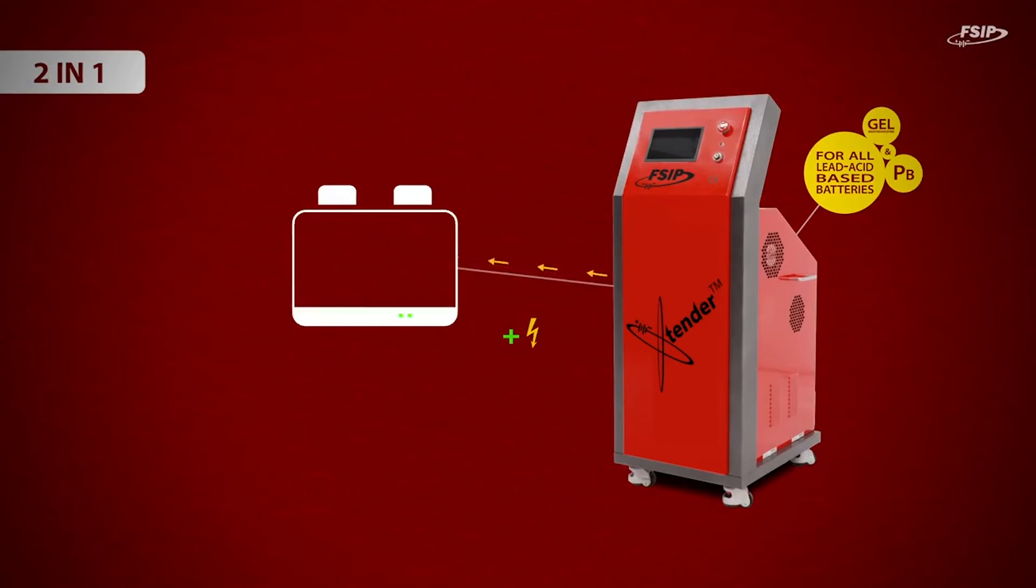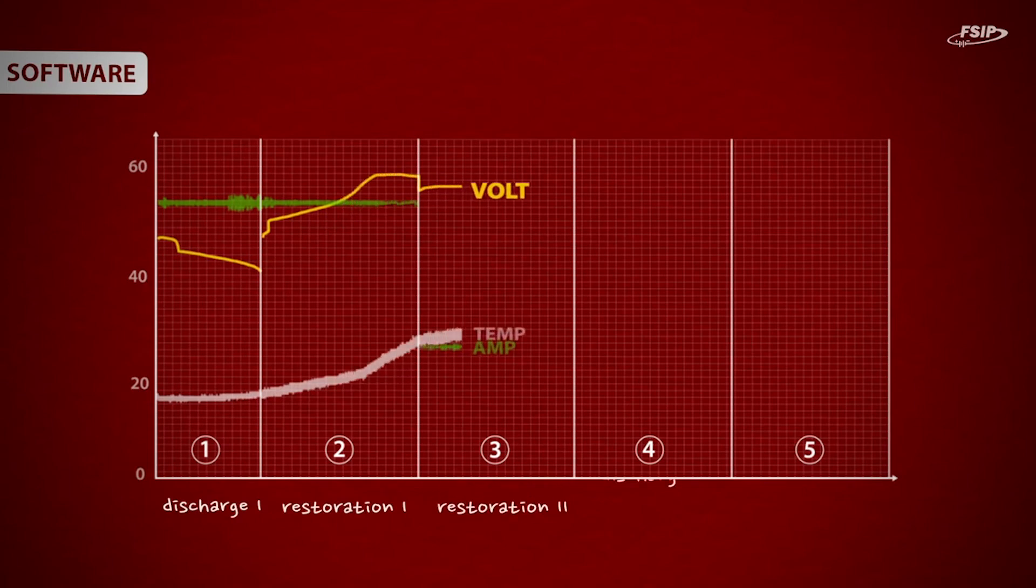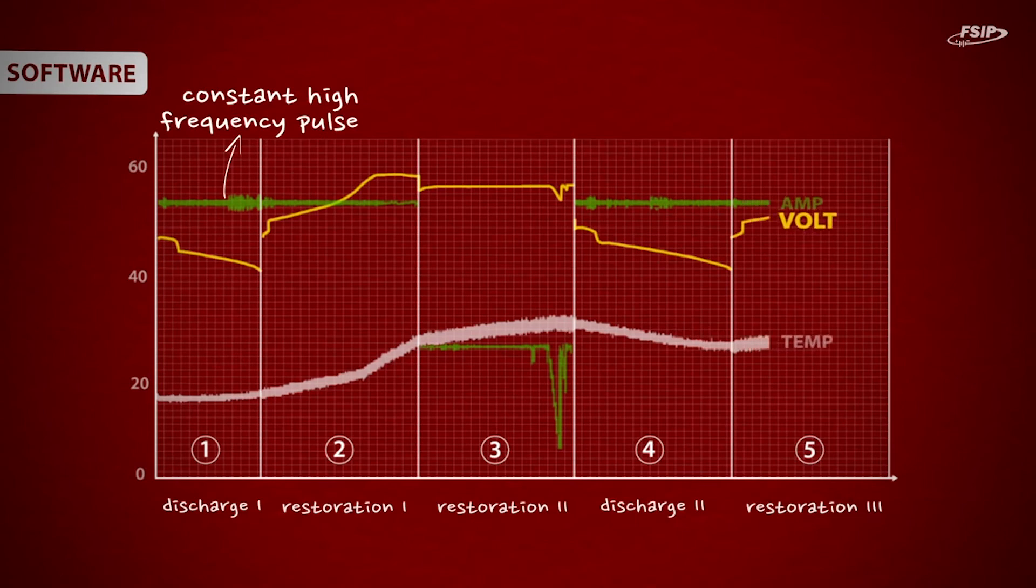An automatic regeneration process consists of five to six phases. It starts with a controlled discharge, then two restoration cycles, followed by another discharge and final restoration. During the process, a high-frequency pulse is applied. This will desulfate your batteries very effectively, without putting too much strain on them.